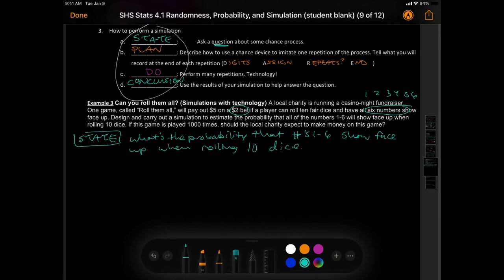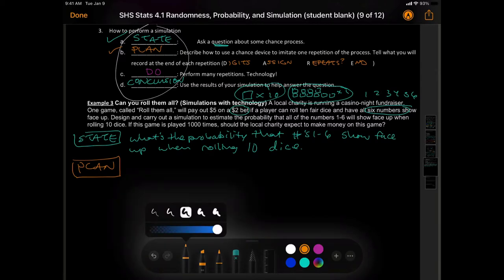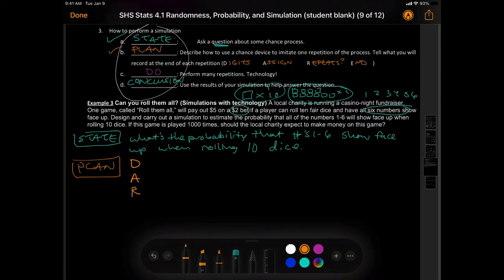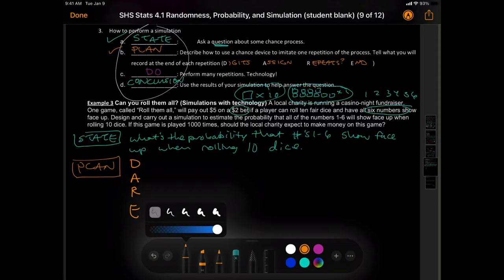Alright. So let's do our first part. So I'm going to be using this method right here. So let's state and make a question here. What's our question? What's the probability that numbers one to six show face up when rolling 10 dice? Now, if you think about this, this can just be rolling one dice ten times, or you can have ten dice one time. Does that make sense? So you can have one of these two options there. Okay, what's our plan? Our plan is, well, I'm going to use the acronym digits. Not acronym digits, I'm going to use acronym dare, that's what I wanted to say.